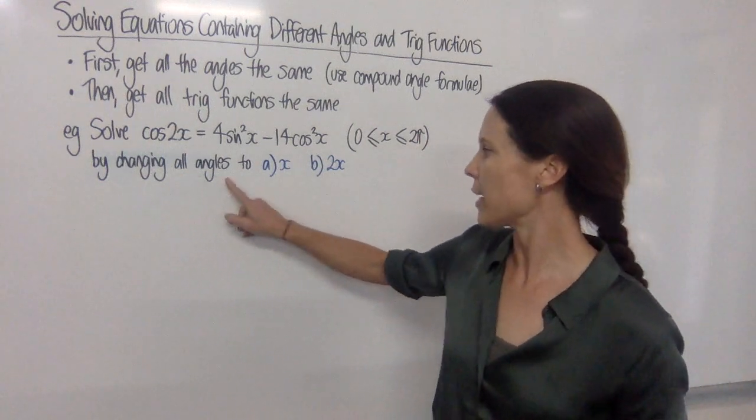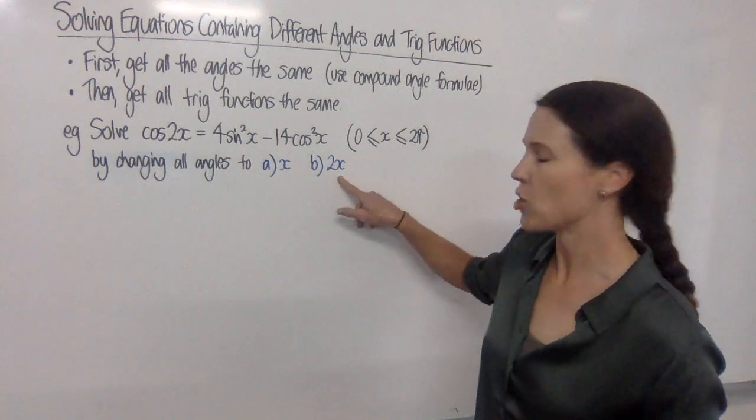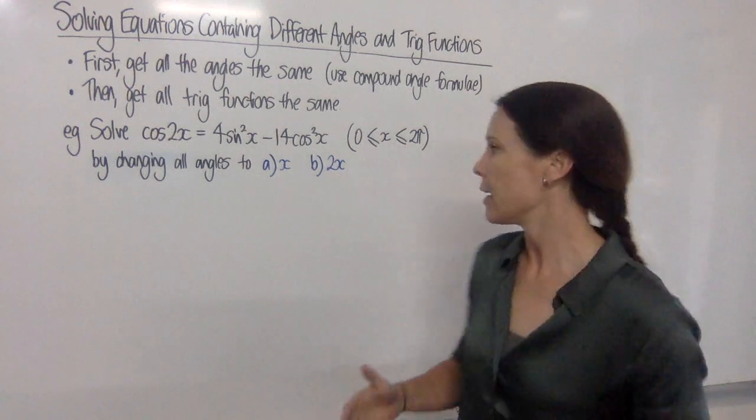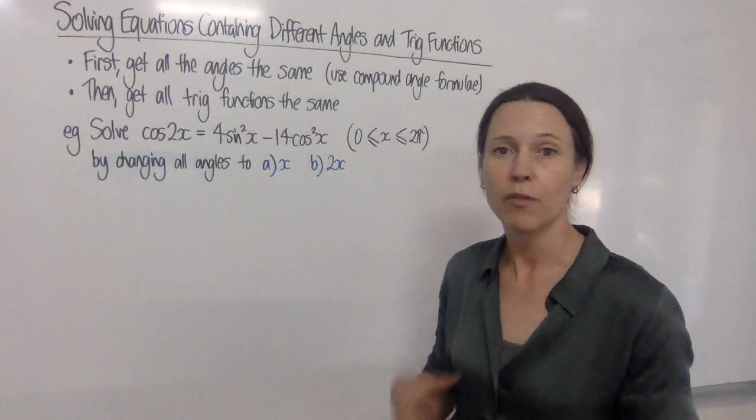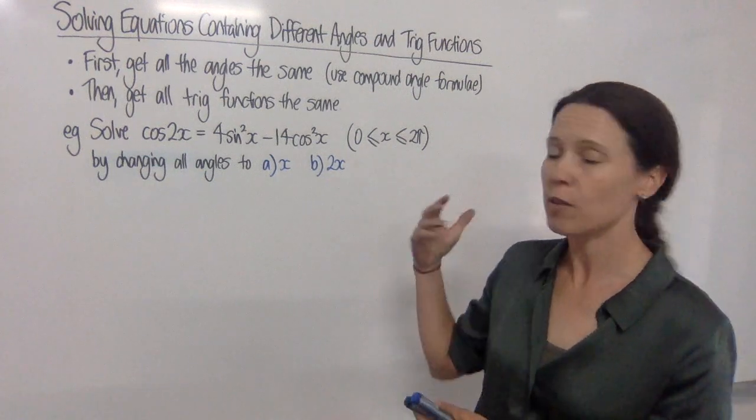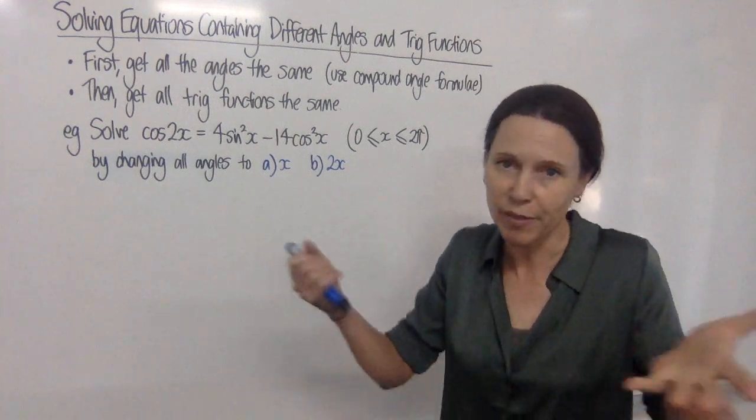Now, it says to do it by changing all the angles to x the first way, and then have a go at doing it by changing all the angles to 2x. We're doing this example a couple of different ways so that you can get a feel for the variety that's there. Of course, most questions won't tell you how to do it and you'll just have to make your choice. Pick your favorite.